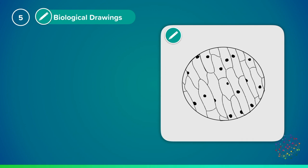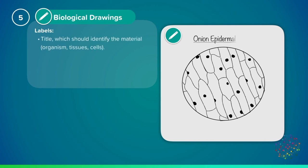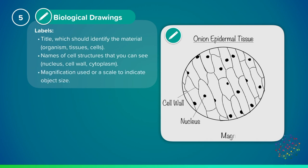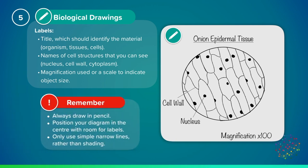The labels that you have to include on your diagrams include a title, names of cell structures that you can see, such as the nucleus and cell wall, and the magnification or scale used to observe the object. Here are some tips for making your biological drawings.